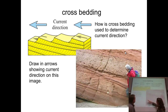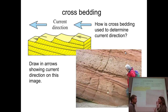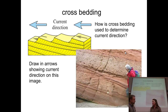Underneath, the angle of the crossbeds is a little different and going in a different direction — the current was flowing from left to right in the picture. So this surface here is a change in current direction, and that's what's important for geologists to figure out. If we're quarrying this rock or looking for other deposits associated with this sandstone, we might use the crossbedding to help us with that.